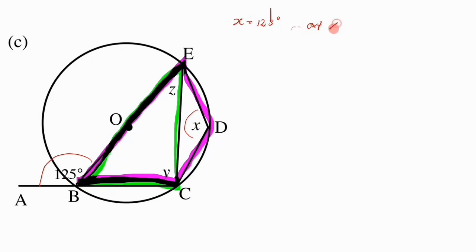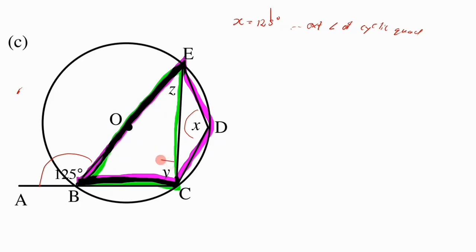Now, how do we find y? We can see that we have a diameter here, which is BOE. We know a diameter subtends an angle of 90 degrees on the circumference — this comes from Theorem 3. So y equals 90 degrees, and we say angle on a semicircle.